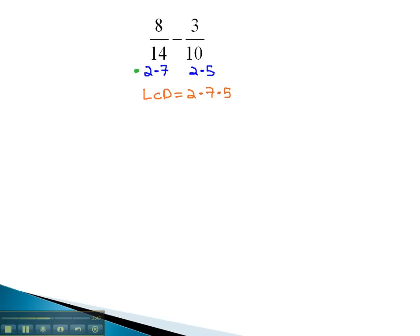We will now multiply each fraction by what it's missing. The first fraction is missing a 5. We multiply by 5 in the numerator and denominator. 5 times 8 is 40 over 5 times 2 times 7 is 70, minus...